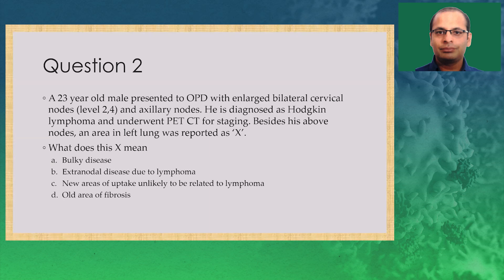Question 2: A 23-year-old male diagnosed with Hodgkin lymphoma underwent PET for staging. Besides his involved nodes, an area in the left lung was reported as X. What does X mean on PET? Options: bulky disease, extranodal disease, new area of uptake unlikely related to lymphoma, or old area of fibrosis. As highlighted during the presentation, on PET scan X stands for new areas of uptake which are unlikely to be related to lymphoma. The correct answer is option C.